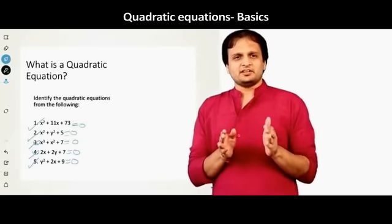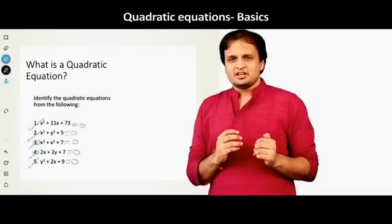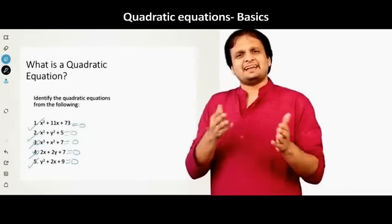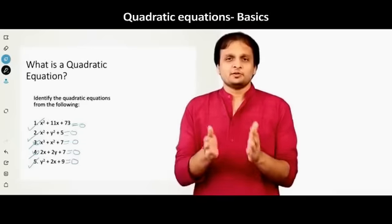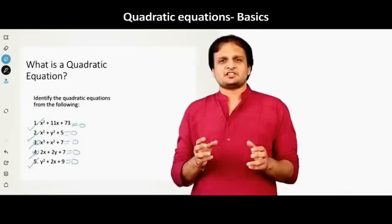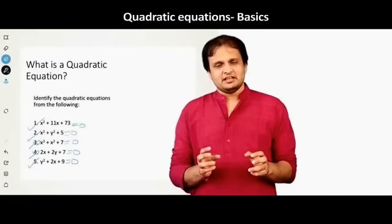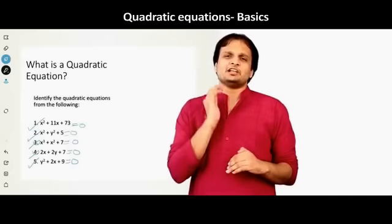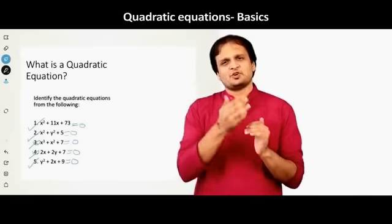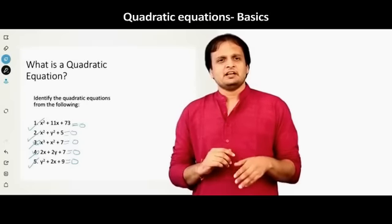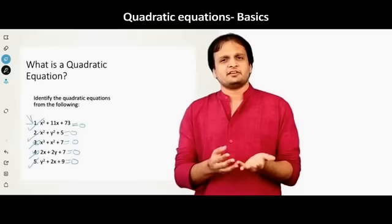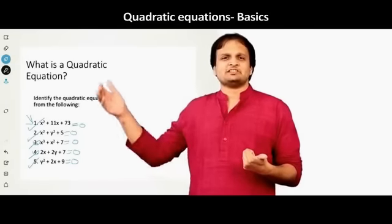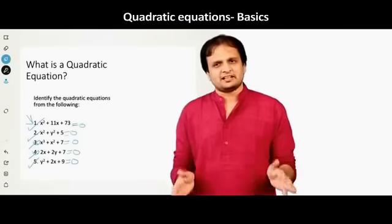Now one thing you need to note here is that in some of these equations, we had only x or only y, while there was some in which we had x and y together. Now the good news is for you in the exam, we do not have to solve equations which have two different variables. So if you have x square plus y square equal to 5, that is out of syllabus. We will generally deal only with one variable. So either only x or only y or only z. So if you look at all these, which of them is a part of our curriculum? Only the first one x square plus 11x plus 73 equals 0. None of the others will be asked to you in the exam.